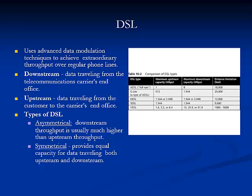Digital Subscriber Line, or DSL, is a transmission method that uses advanced data modulation techniques to achieve extraordinary throughput over regular phone lines. It comes in several different varieties, each with a unique signaling method and, as a result, a different throughput. Some are asymmetrical, like ADSL, whereas others are symmetrical, like SDSL. DSL is a dedicated service that competes with ISDN and cable technologies.